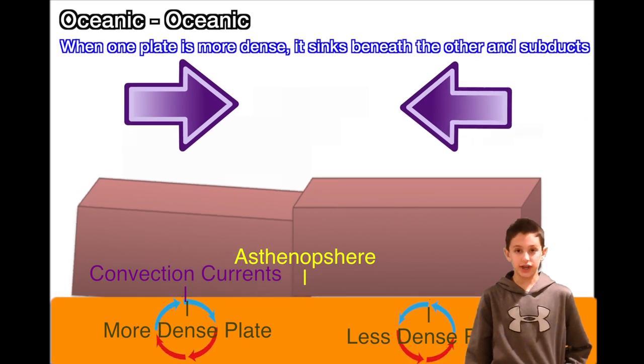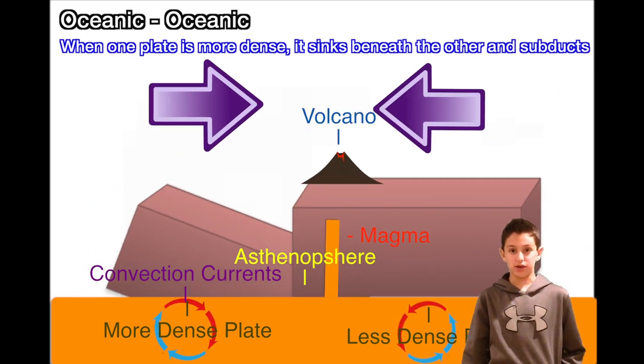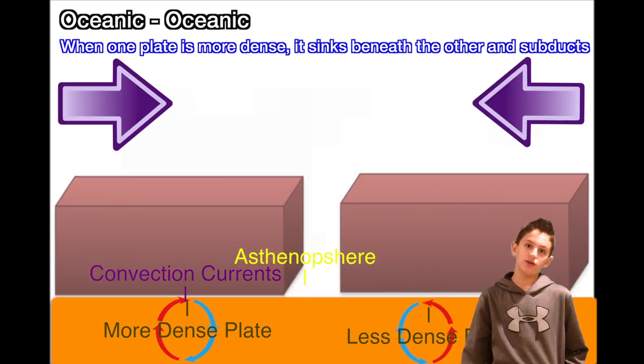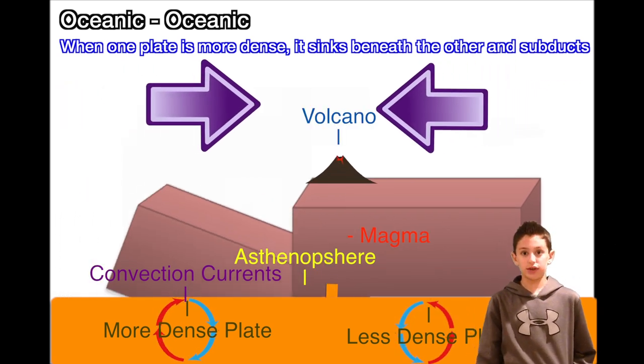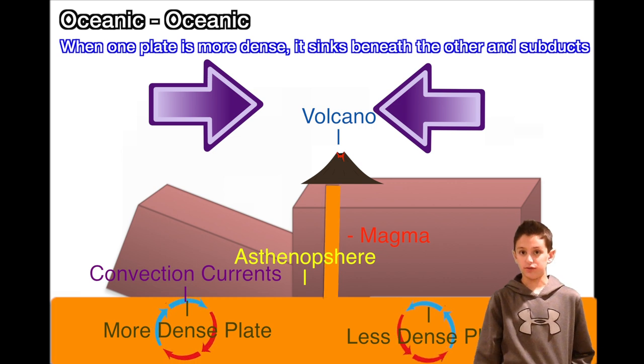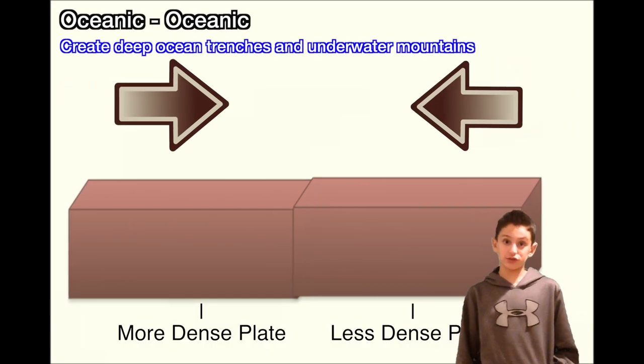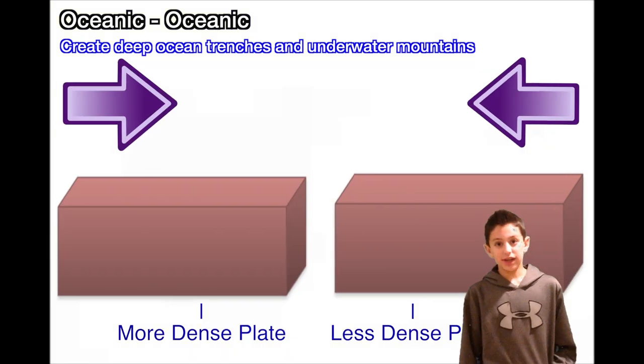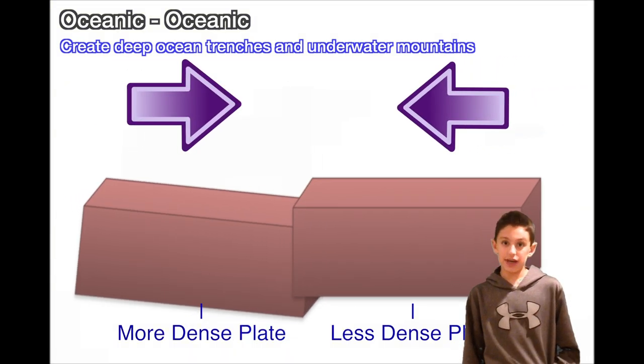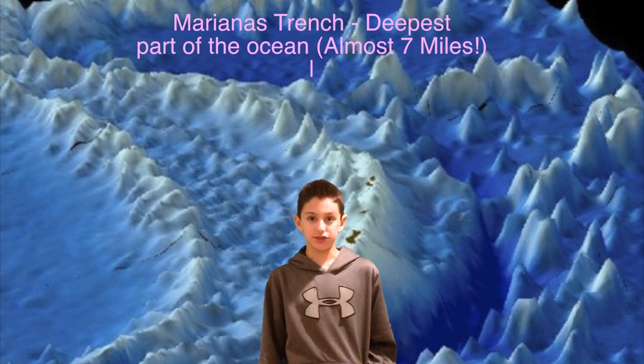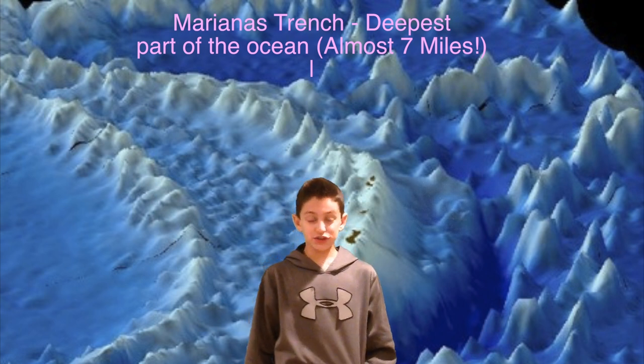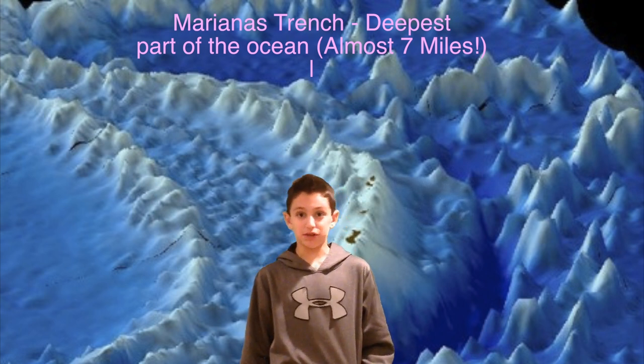Subduction can also occur in our last convergent boundary, oceanic crust to oceanic crust. Subduction occurs when one of the oceanic plates is more dense than the other one and slides beneath the less dense one, just like how it would occur with a continental to oceanic convergent boundary. It often creates trenches underwater and sometimes mountains. An effect of this boundary is the Marianas Trench. The Marianas Trench is the deepest place below sea level on Earth.